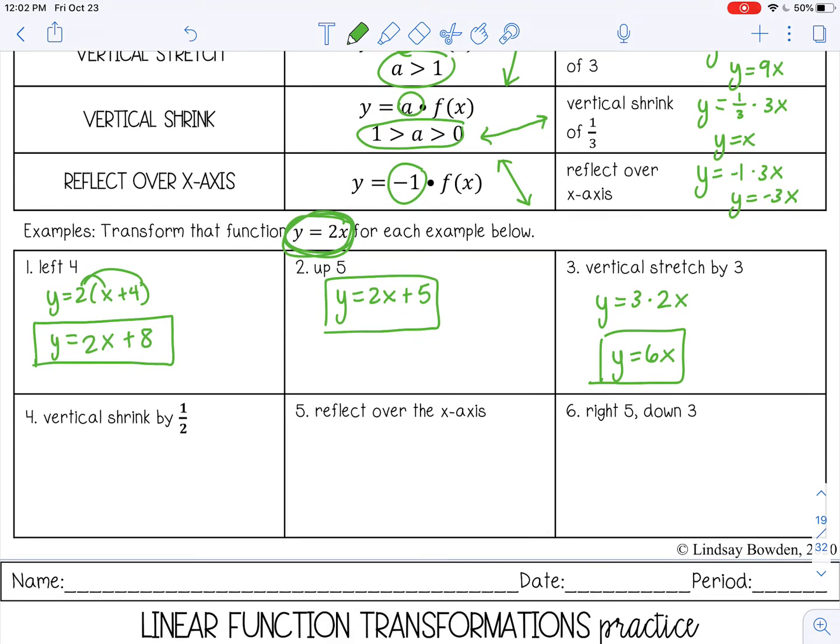And then a vertical shrink, one half times 2x. One half times two, that's one. So just y equals x.